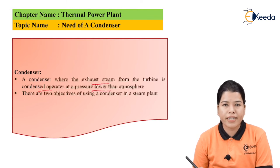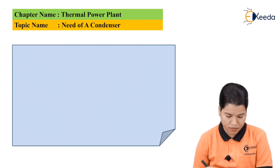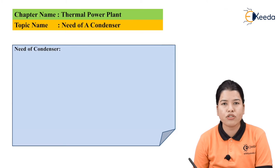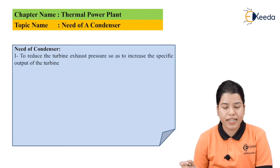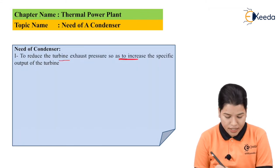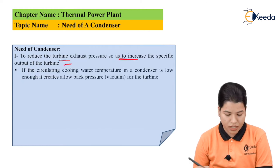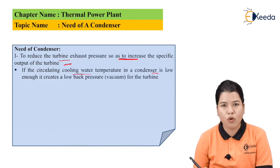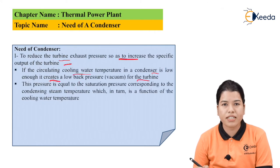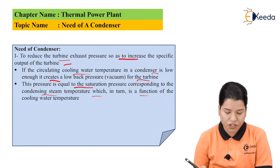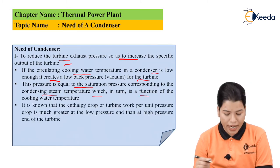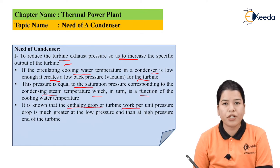There are basically two objectives of using the condenser in the thermal power plant. The first need is to reduce the turbine exhaust pressure so as to increase the specific output of the turbine. If the cooling water temperature in the condenser is low enough, it creates a low back pressure equal to vacuum for the turbine. This pressure is equal to the saturation pressure corresponding to the condensing steam temperature, which in turn is a function of the cooling water temperature. The enthalpy drop or turbine work per unit pressure drop is much greater at the low pressure end than the high pressure end of the turbine.